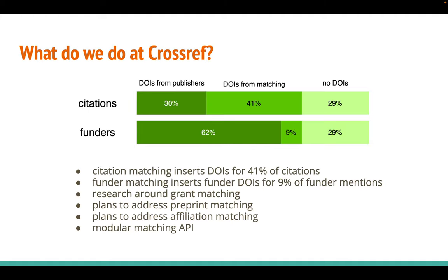And this is exactly what we do at Crossref. As a result of the matching we perform, in addition to the 30% of cited DOIs provided by publishers, we have DOIs for a further 41% of the citations. Similarly, the matching inserts funder DOIs for 90% of the funder mentions. But this is only the beginning. Earlier this year, we did an analysis around matching of funding information to registered grants — you can read all about it on our blog — and we will continue this research.